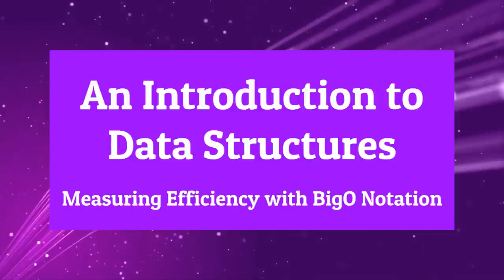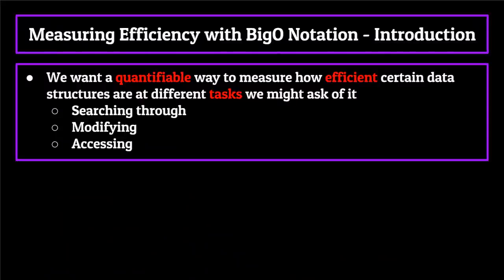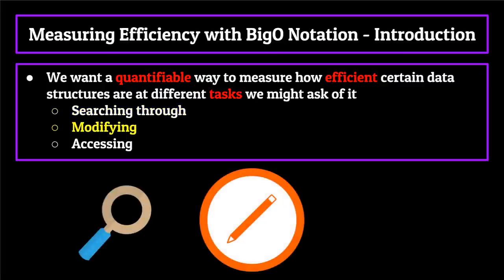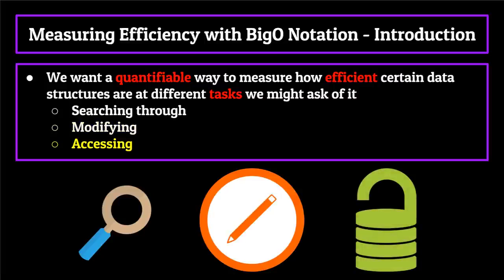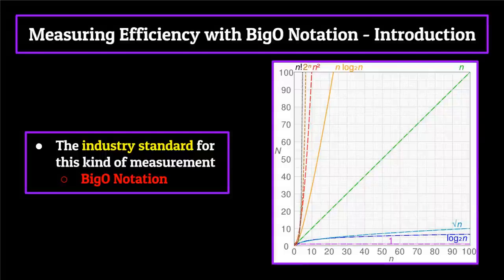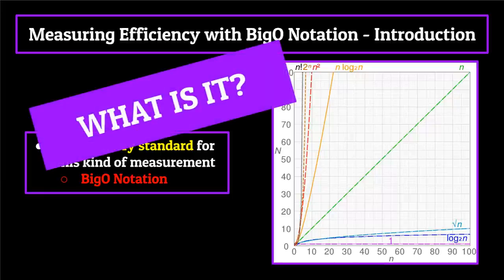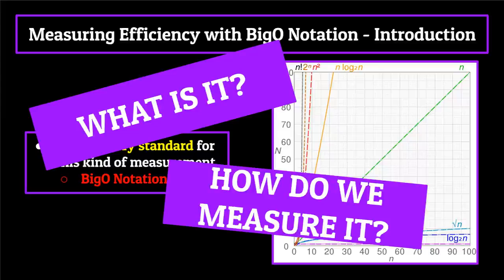Before we talk about all these crazy data structures like maps and heaps, we want a quantifiable way to measure how efficient a certain data structure is at the different tasks we might ask of it. If we're going to be storing extremely large amounts of data, being able to search through, modify, or access the information within a data structure needs to be fast and efficient. As we briefly mentioned before, the industry standard for this kind of implementation is big O notation. So what exactly is big O notation? And how do we measure it for a specific data structure? That's what we'll be covering in this segment. For most of the basic and intermediate data structures in this series, we're going to be spending some time talking about its efficiency using big O notation. So this is definitely a topic you're not going to want to skip.